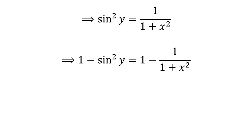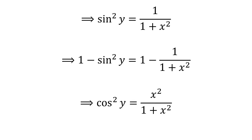Multiplying minus 1 to both sides and then adding 1, we get 1 minus sine squared of y equals 1 minus 1 divided by 1 plus x squared. By the Pythagorean trigonometric identity, sine squared of y plus cosine squared of y equals 1, so 1 minus sine squared of y equals cosine squared of y. Therefore, cosine squared of y equals x squared divided by 1 plus x squared.